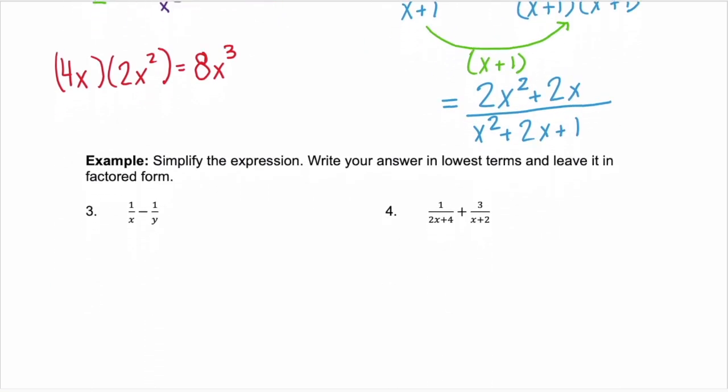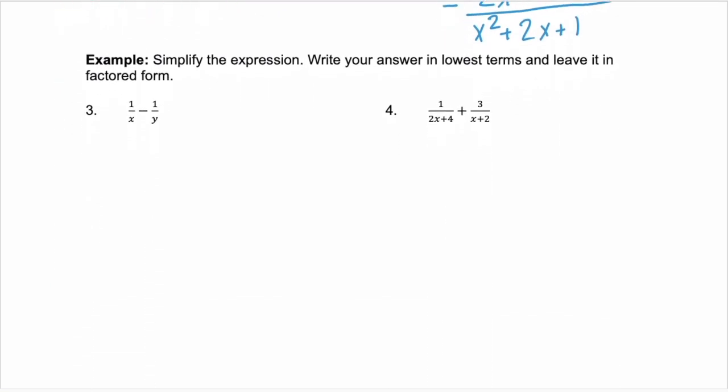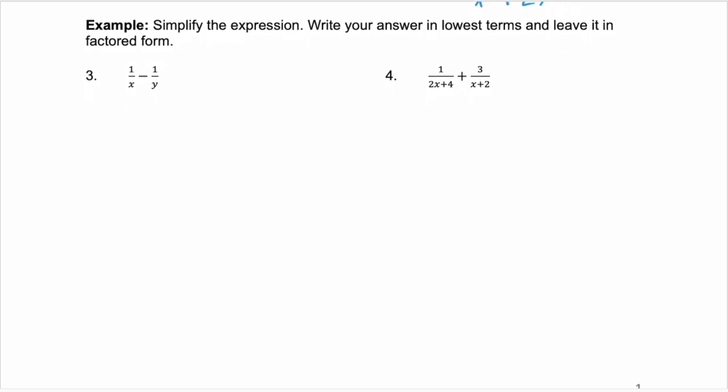Now, what if we're not given a new denominator? We're just given two rational expressions and we need to combine them — that's where we need to find the least common multiple. In example 3, we're given two rational expressions: 1 over x and 1 over y, and we're subtracting them. First we need to identify the factors of our denominators, which are x and y. So our least common multiple is going to be xy.